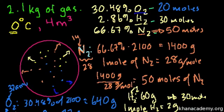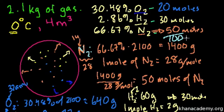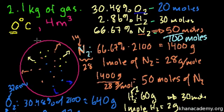So the total moles of gas: 20 moles of oxygen, plus 30 moles of hydrogen, plus 50 moles of nitrogen — add them up and we have 100 moles of gas. If we want to figure out the total pressure, we can just apply this 100 moles to PV = nRT.